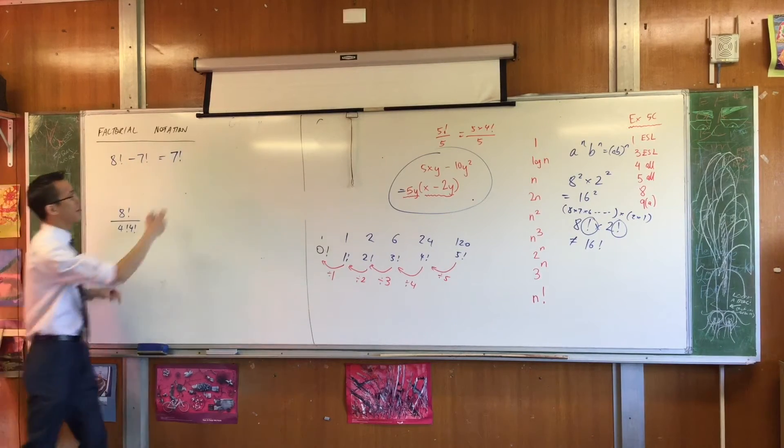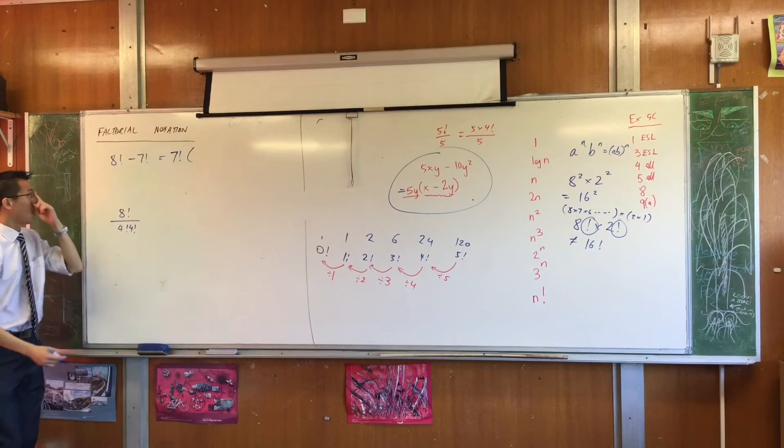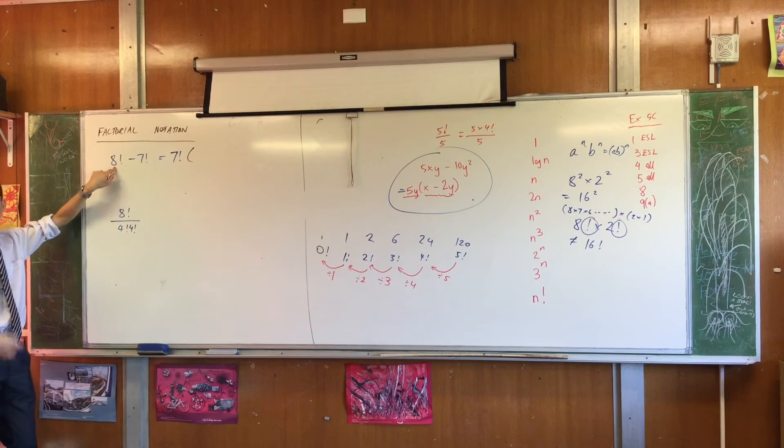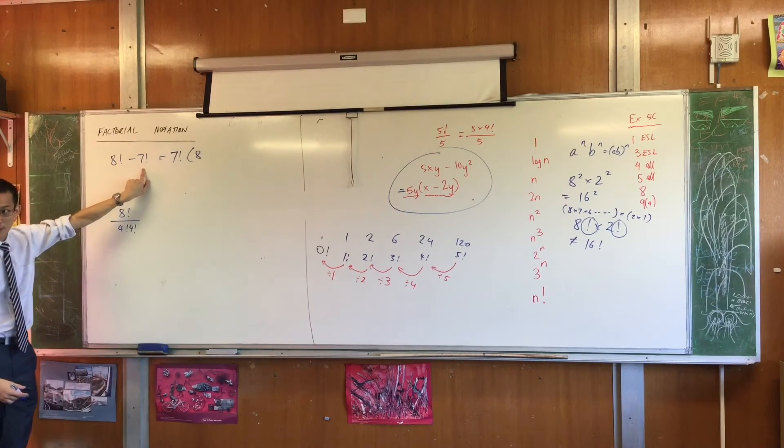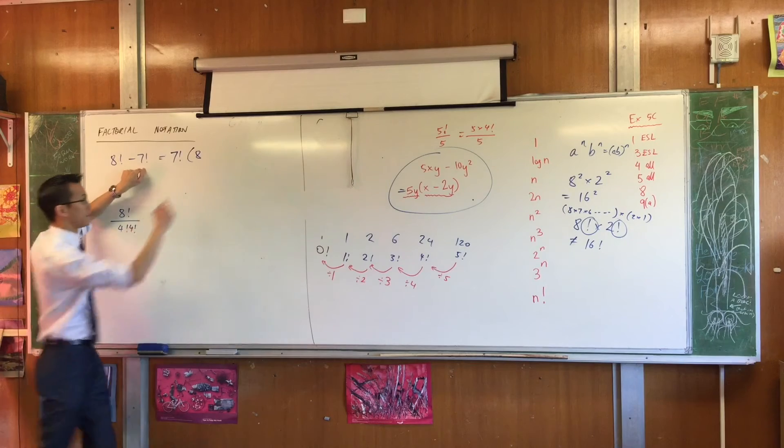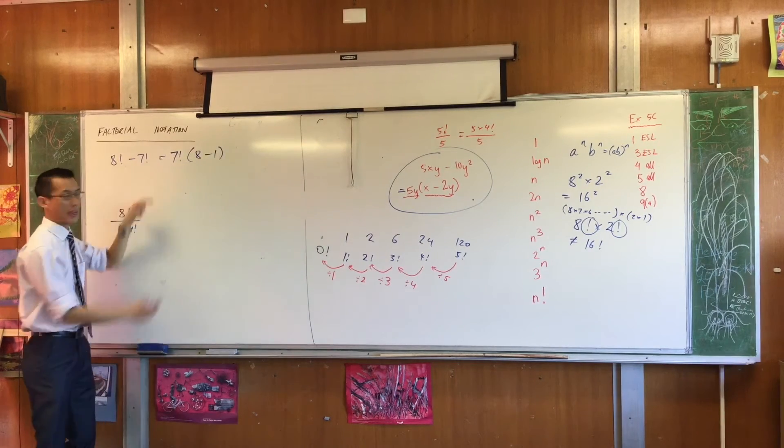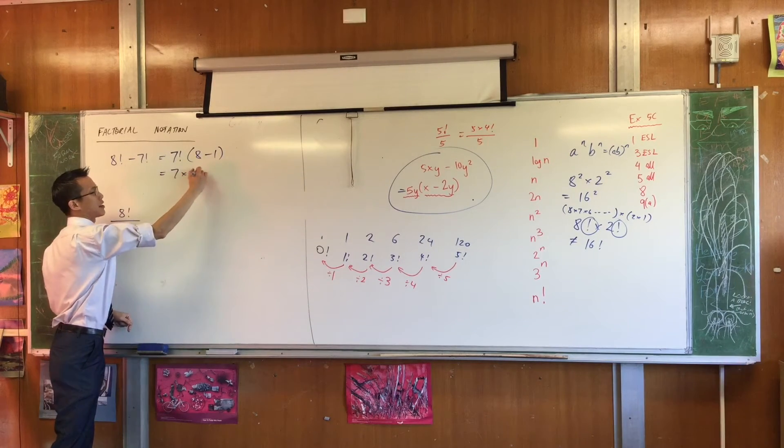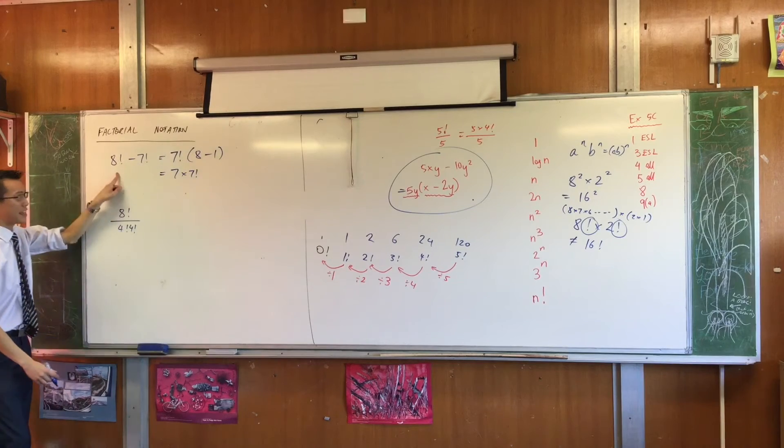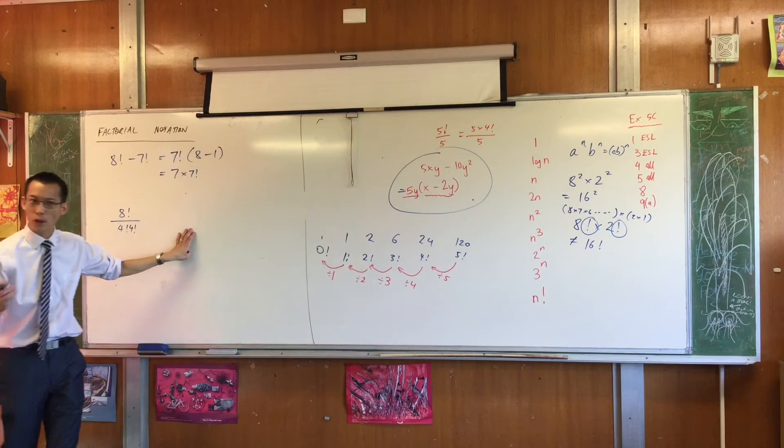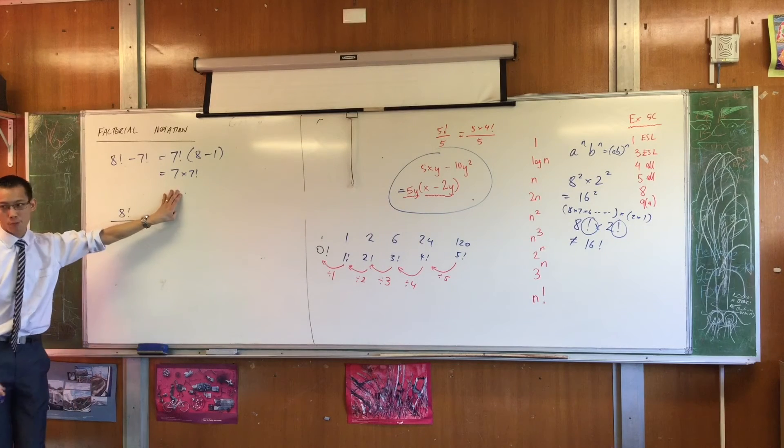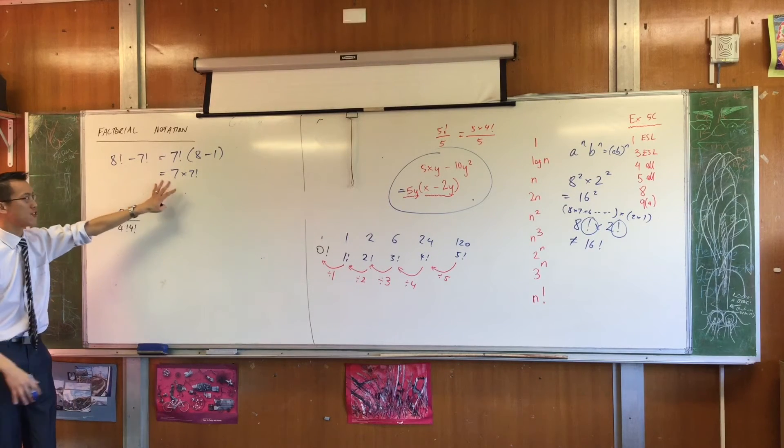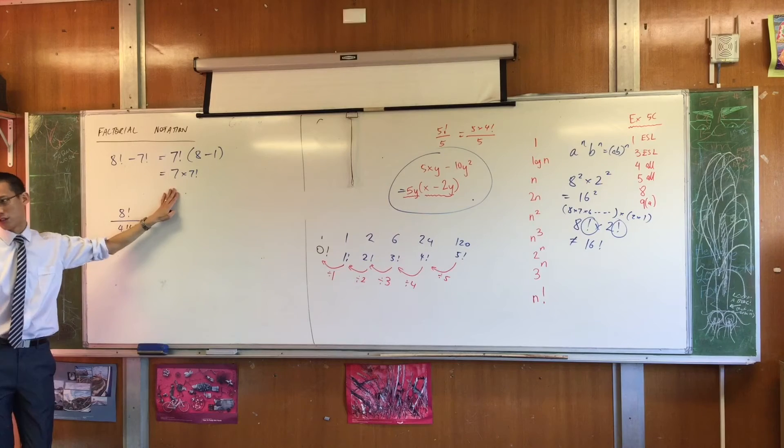Once I factorize it out, what does that leave me with? Well, there are 8 lots of 7 factorial in here, so I say 8. How many lots of 7 factorial are here? 1. So I subtract 1. Now you might not think 7 times 7 factorial is a big improvement on this, but again remember, what I'm trying to do is avoid those big numbers, and it's marginally an improvement, and it will be more of an improvement when this becomes algebra later on, and you have no choice but to do this. You can't just chuck it into a calculator.